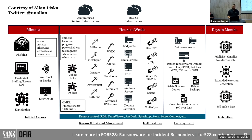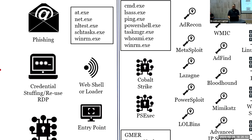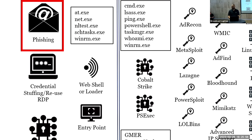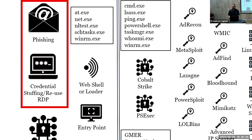What are the top methods of entry into the environment? Good old phishing — phishing is such a classic and will work forever because it exploits us humans. Credential reuse, stuffing, or brute forcing via Remote Desktop Protocol.